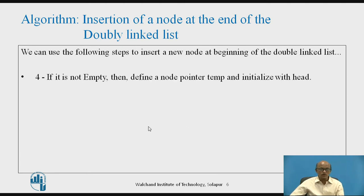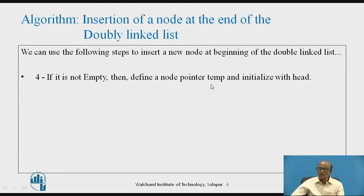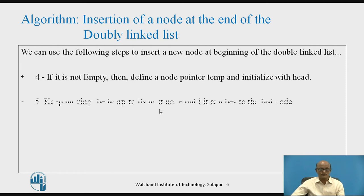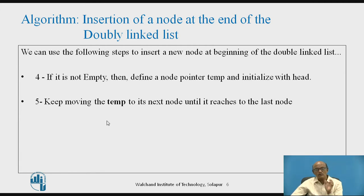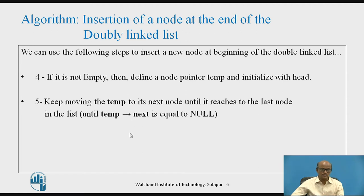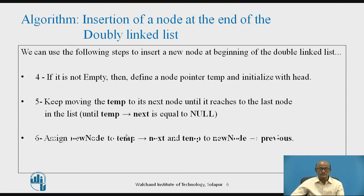If the list is not empty and there are more than one nodes, we need to reach the last node. For that, we define a temporary pointer and assign the value of head to it, so temp now holds the address of the first node. We then keep moving temp to the next node until it reaches the last node in the list.